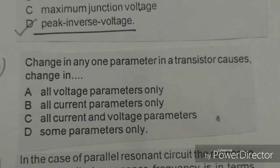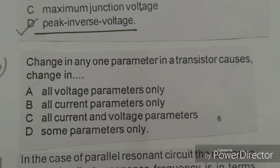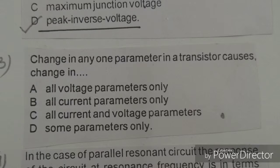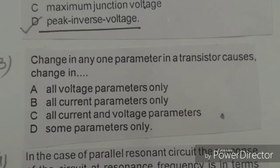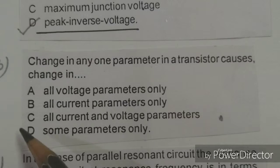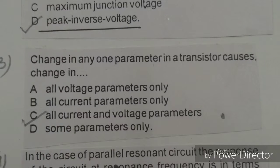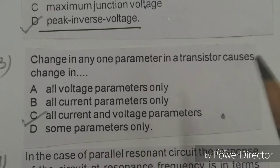Next objective: A change in any one parameter in the transistor causes a change in. Options given: all voltage parameters only, all current parameters only, all current and voltage parameters, some parameters only. The right answer is C, all current and voltage parameters.